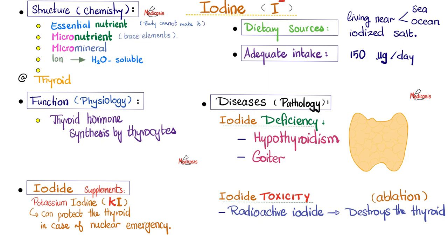The function of iodine is to allow your thyroid gland to make thyroid hormone. Iodine deficiency leads to hypothyroidism; the hypothalamus shouts louder, the pituitary shouts louder, TSH rises, and goiter develops — the thyroid gland swells in the neck.